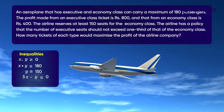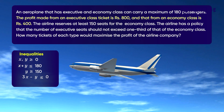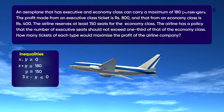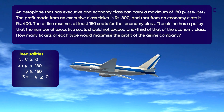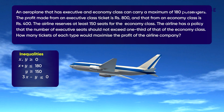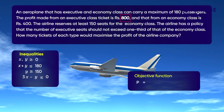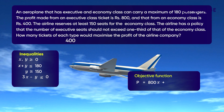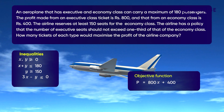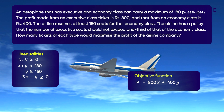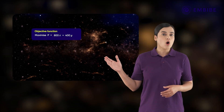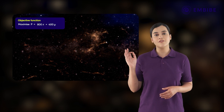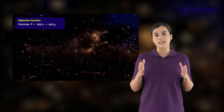Now let us look at the profit factors to construct the objective function. The profit made from an executive class ticket is Rs. 800 and that from an economy class is Rs. 400. So with X executive class tickets and Y economy class tickets, the profit per trip is Rs. 800X plus Rs. 400Y. Let this be equal to P. The optimal solution would be the maximum value of this linear function P subject to the linear constraints.